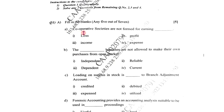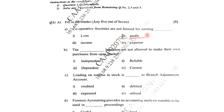First question: Cooperative societies are not formed for earning dash. Options are loss, profit, income, expenses. The correct answer is profit. Cooperative societies are not formed for earning profit.